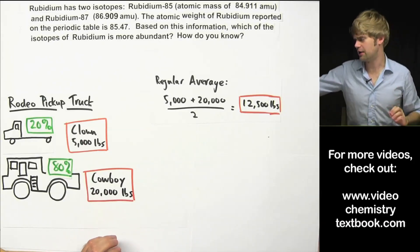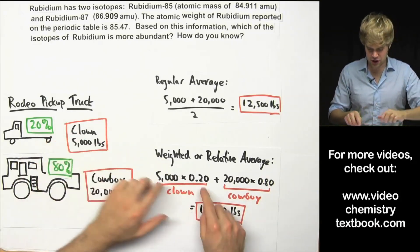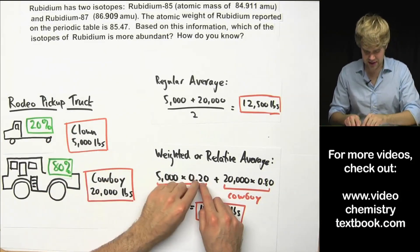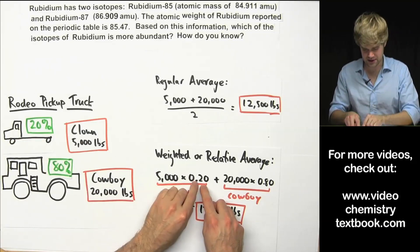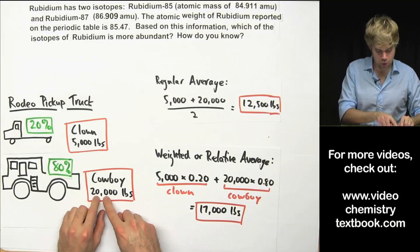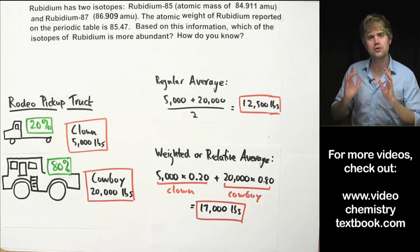In this case, we have to calculate what's called a relative or a weighted average, where we take weights of each one of these and multiply it by the percentage that we have of it. So 5,000 pounds for the clown times 20% as a decimal, plus 20,000 pounds for the cowboy times 80% as a decimal. And then when we do that,